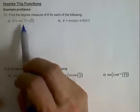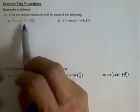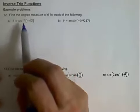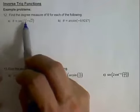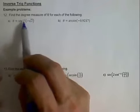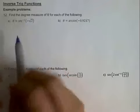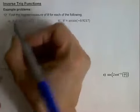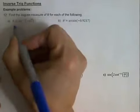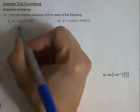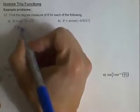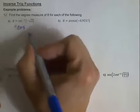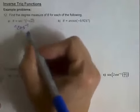Remember that with your three reciprocal functions — cotangent, secant, or cosecant — if you're trying to do this especially with your calculator, you want to change it to its reciprocal function. In this one, the reciprocal of secant is cosine.